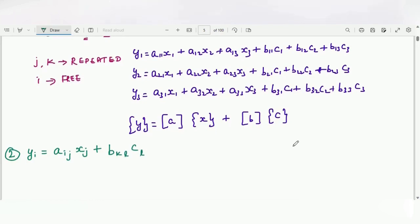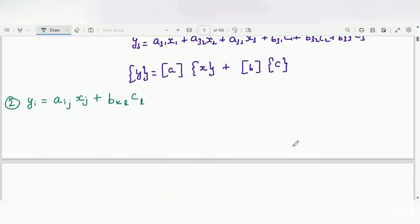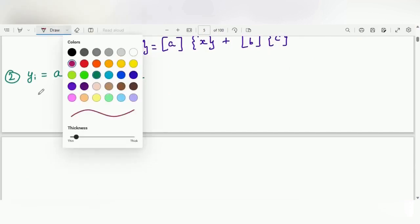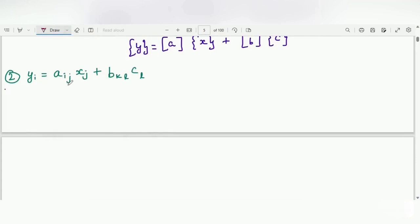The first step is to write out the repeated and free indices. Here j has been repeated twice and l is also been repeated twice, so j and l are the repeated indices.